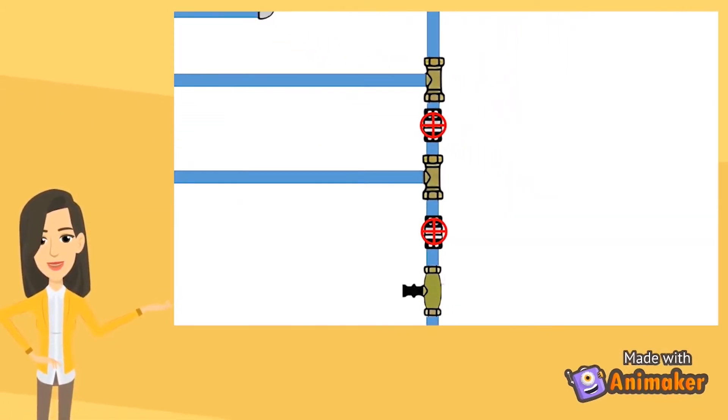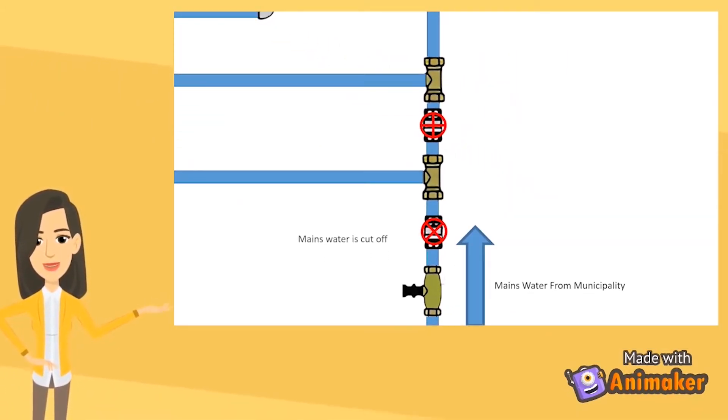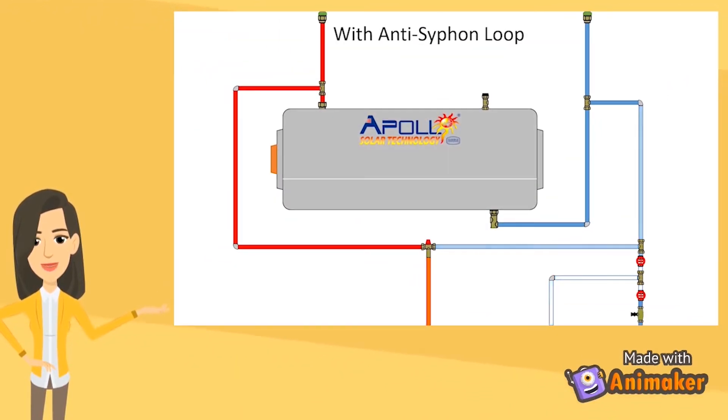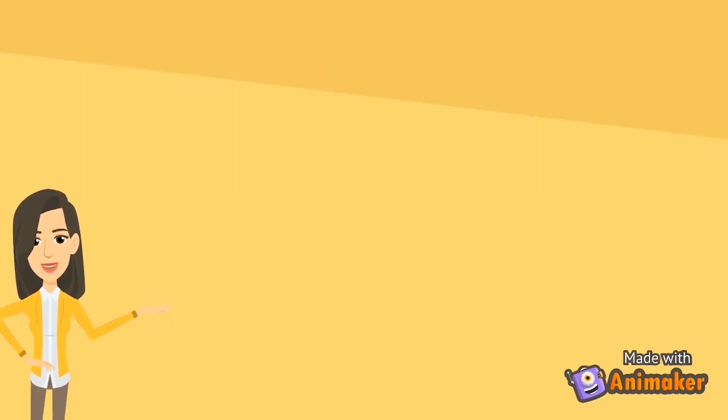Hence, when a plumber installs an anti-siphon loop on a geyser above the cold water inlet, the hot water inside the geyser cannot drain out through the cold water inlet pipe, as it is impossible for water to naturally flow upwards and above the water level inside of the cylinder. The vacuum breaker is at the topmost part of the loop to function as the open end of the hose, thus preventing the siphon process from occurring.